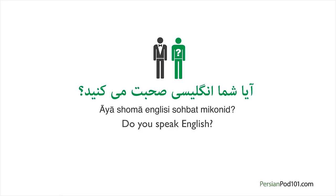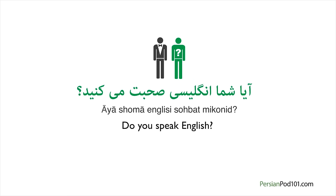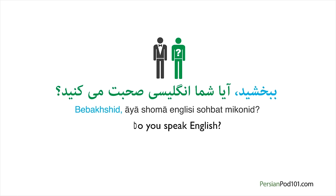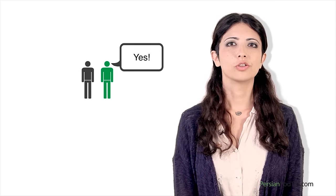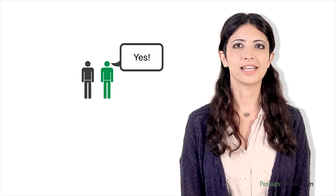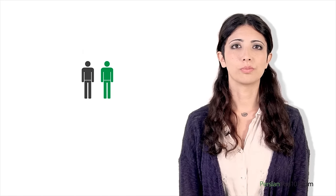'Aya shoma ingilisi sohbat mikonid?' means 'Do you speak English?' By adding 'bebekhshid,' or 'excuse me,' the sentence becomes even more polite: 'Bebekhshid, aya shoma ingilisi sohbat mikonid?' If someone replies to you in English, you'll know the answer is yes. But if they answer in Persian, you might receive one of these responses: 'Bale' — yes. 'Bale, yek kami' — a little. 'Na, man ingilisi sohbat nemikonam' — No, I cannot speak English.